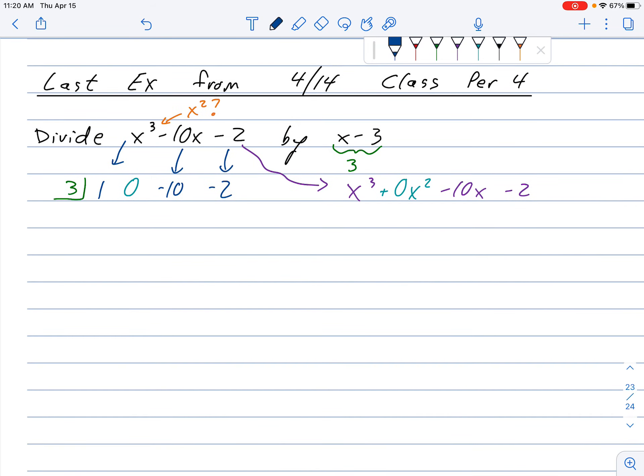That's really the only trick. Everything after that is just a regular synthetic division. Drop down a 1. 3 times 1 is 3. Add going down. 0 plus 3 is 3.